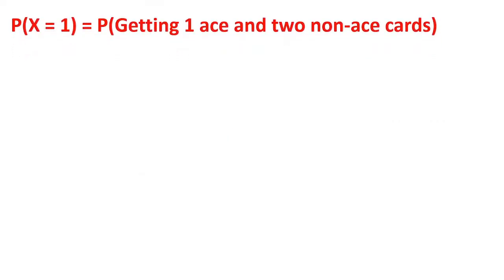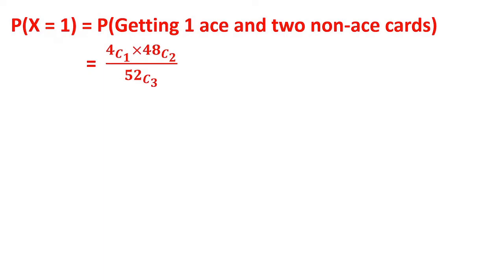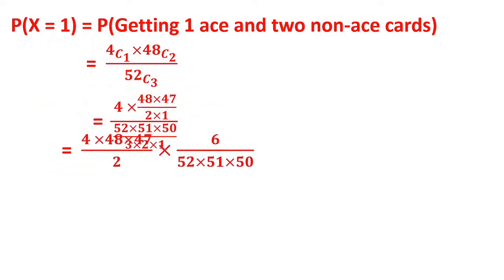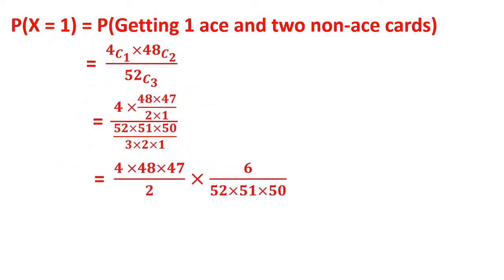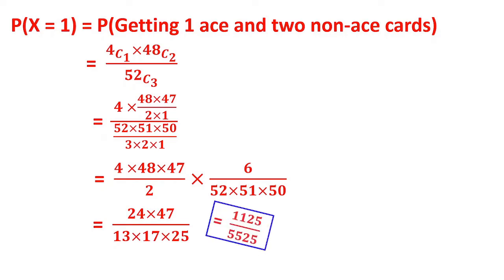For P(X=1), getting 1 ace and 2 non-aces: there are 4 ace cards, so 4C1; 2 non-aces from 48, so 48C2. Computing: 48C2 = 48 × 47 / 2 and 52C3 = 52 × 51 × 50 / 6. The final answer simplifies to 1128 / 5525.